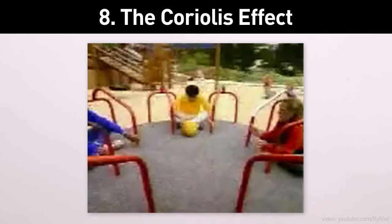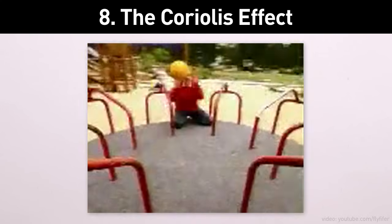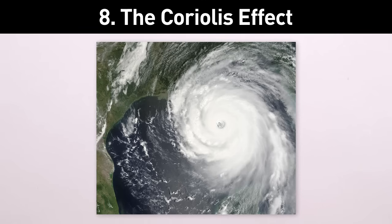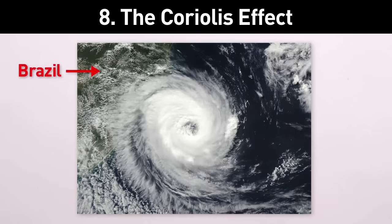8. The Coriolis effect means freely moving things like cannonballs or hurricane winds are deflected to the right, but only if you're north of the equator. If you're south of the equator, they're deflected left.